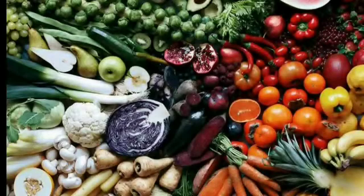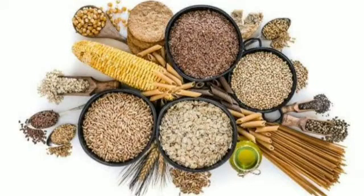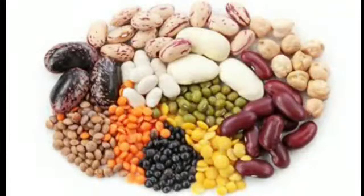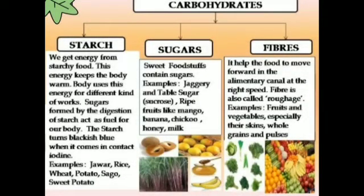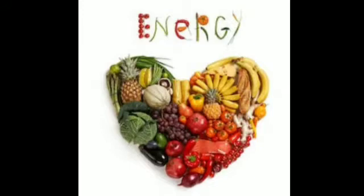Fruits and vegetables, especially their skins, whole grains and pulses are all sources of fibre in food. If our food does not contain enough fibre, it can lead to constipation. We have now learnt about three types of substances present in our food: starch, sugar and fibre. These substances are together called carbohydrates. The most important use of carbohydrates is to provide the body with energy.